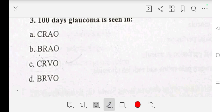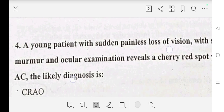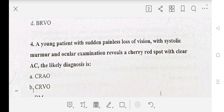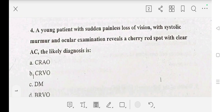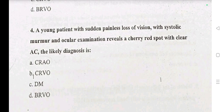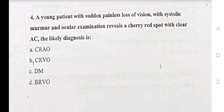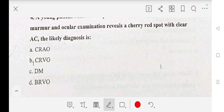Our answer is C: CRVO. Question number 4: A young patient with sudden painless loss of vision with systolic murmur, ocular examination reveals a cherry red spot with clear AC. The likely diagnosis is — A: CRAO, B: CRVO, C: DM, D: BRVO. Our answer is A: CRAO.